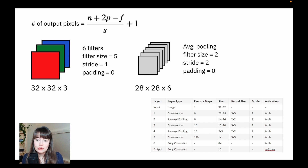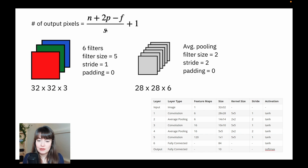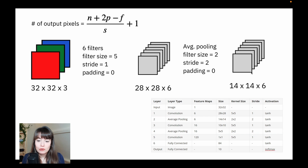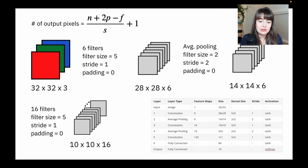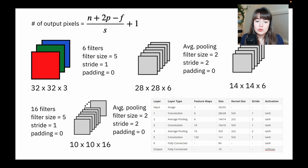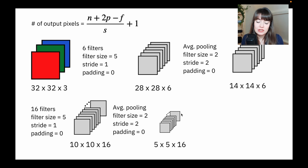Next is average pooling. We use a filter size of two and a stride of two. I definitely encourage you to do this calculation by hand to get used to the math. We get a 14 by 14 matrix, again with a depth of six. Then we apply a convolutional layer with 16 filters of size five by five and stride one. That gives us 16 results, each of size 10 by 10 using this formula. One of the last things we do is another average pooling with filter size two and stride two, giving us 16 results that are five by five.